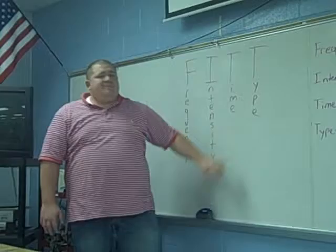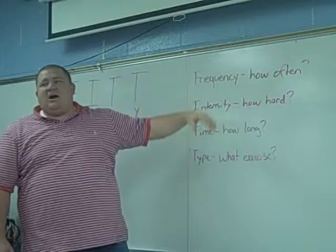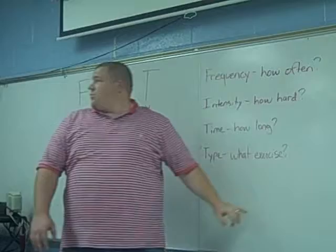You can actually have it written down on your paper in front of you. Here's a real quick definition you should also have: frequency is how often, intensity is how hard, time is how long you're going to plan to exercise for, and type is what type of exercise you want to be doing.